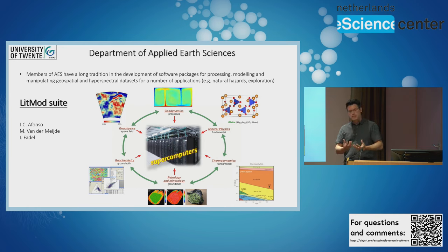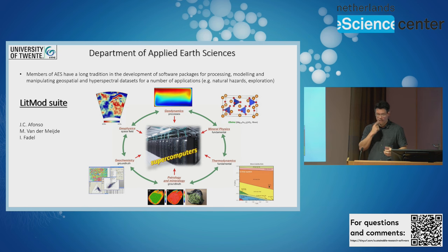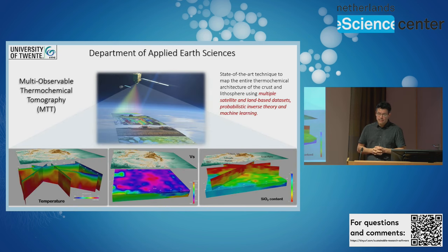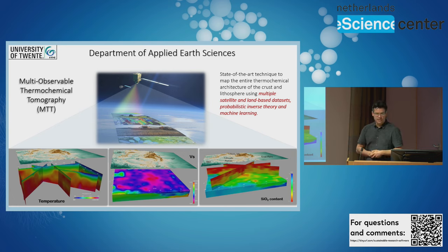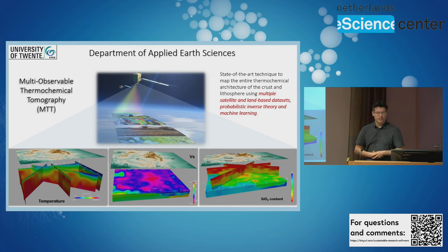It takes a whole bunch of disciplines and crunches them all together in supercomputers to create digital earth twins. Once we have that, we can easily combine a whole bunch of datasets including land-based datasets like seismic information and magnetotellurics, as well as satellite information. That allowed us to create new disciplines like multi-observable thermochemical tomography, which creates models of the subsurface where you can fully characterize the thermochemical structure.